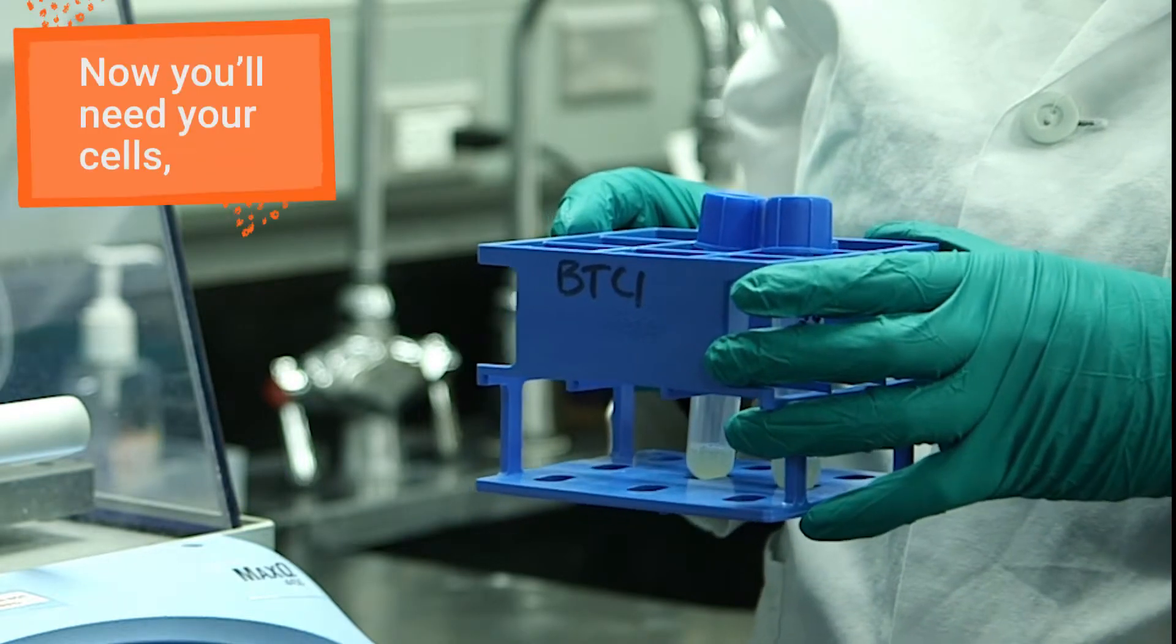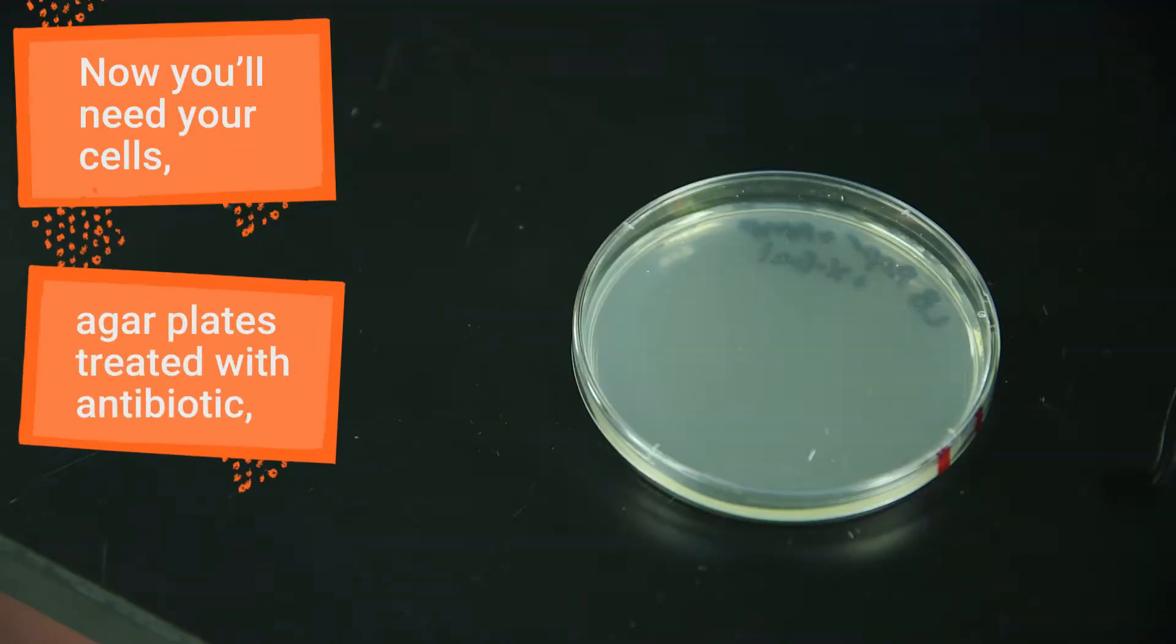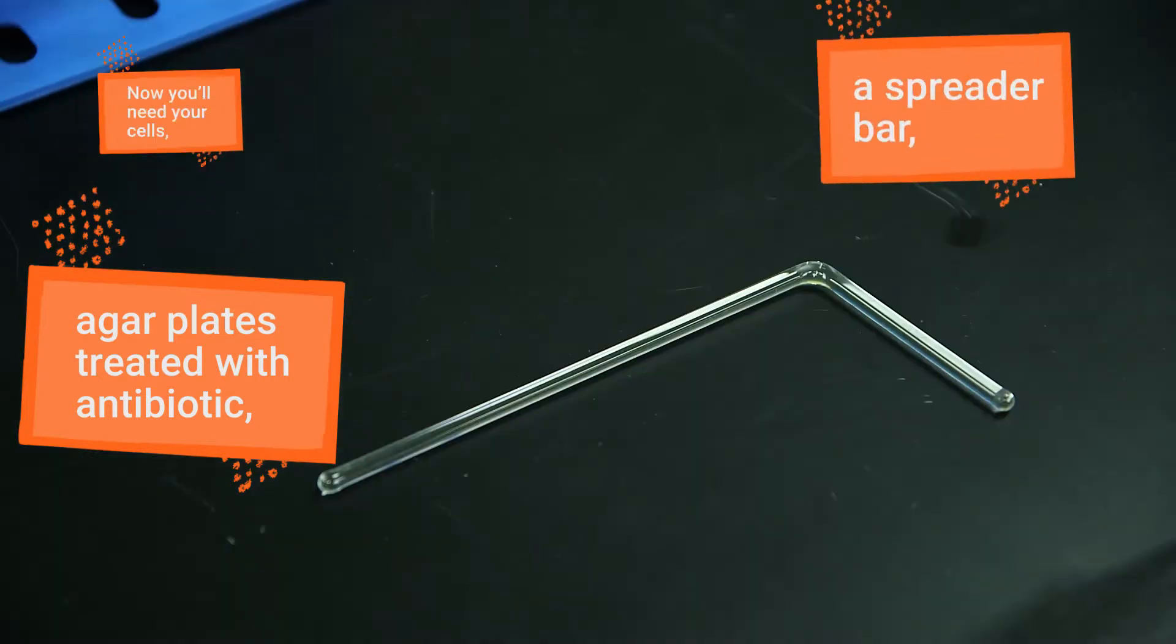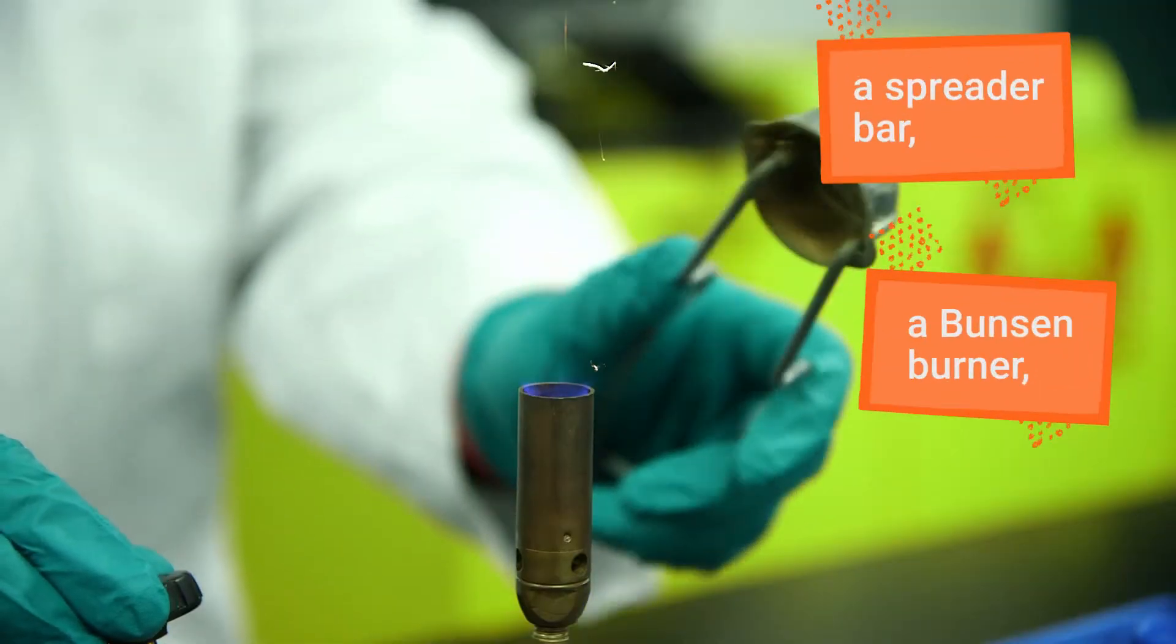For this step, you'll need your cells, agar plates treated with the appropriate antibiotic, a spreader bar, a Bunsen burner, and ethanol.